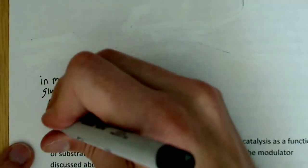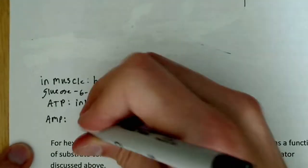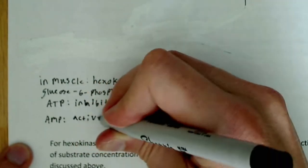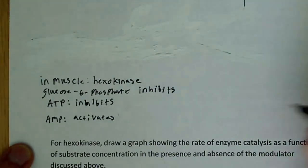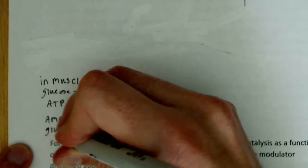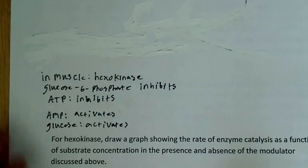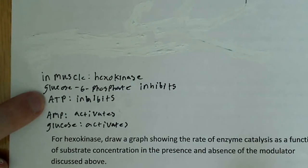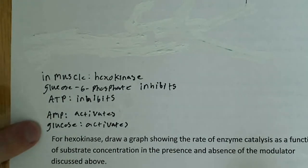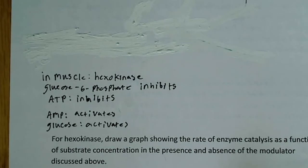And then there's a couple of activators, and the activators are AMP, because remember that's a signal that there's low energy, so this activates. And the other activator is actually glucose itself, which kind of makes sense because that's the substrate. So glucose also activates. Now that's in the muscle. These are allosteric molecules, they bind to a site other than the active site on the enzyme hexokinase, and they alter the shape of the enzyme, induce some conformational change that, in some cases like with ATP and glucose 6-phosphate, makes it more difficult to bind glucose and produce the glucose 6-phosphate, and in other cases it makes it easier, like AMP and glucose.